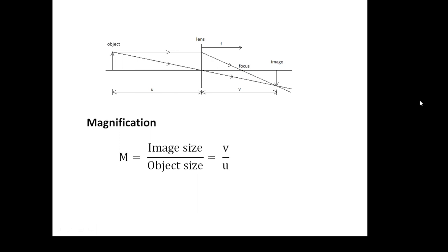One more equation to do with lenses is for magnification. Magnification m is the size of the image divided by the size of the object—it's how much bigger the image is. If m is greater than 1, then the image is bigger. If m is less than 1, then it's smaller. And m equals v over u. You should be able to see that from the similar triangles on the diagram above.